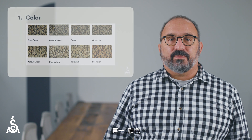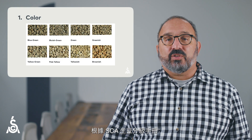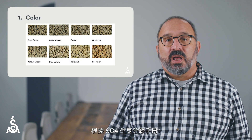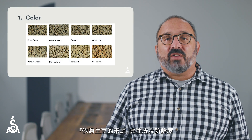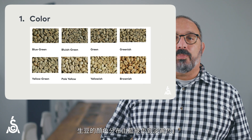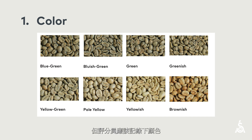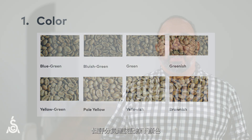First, color. According to the SCA Grading Handbook, unroasted coffee's color ranges from a blue-green to a pale-yellow, depending on origin, processing, or age. Color should be noted by the grader, although there are no prescriptive norms for coffee color.